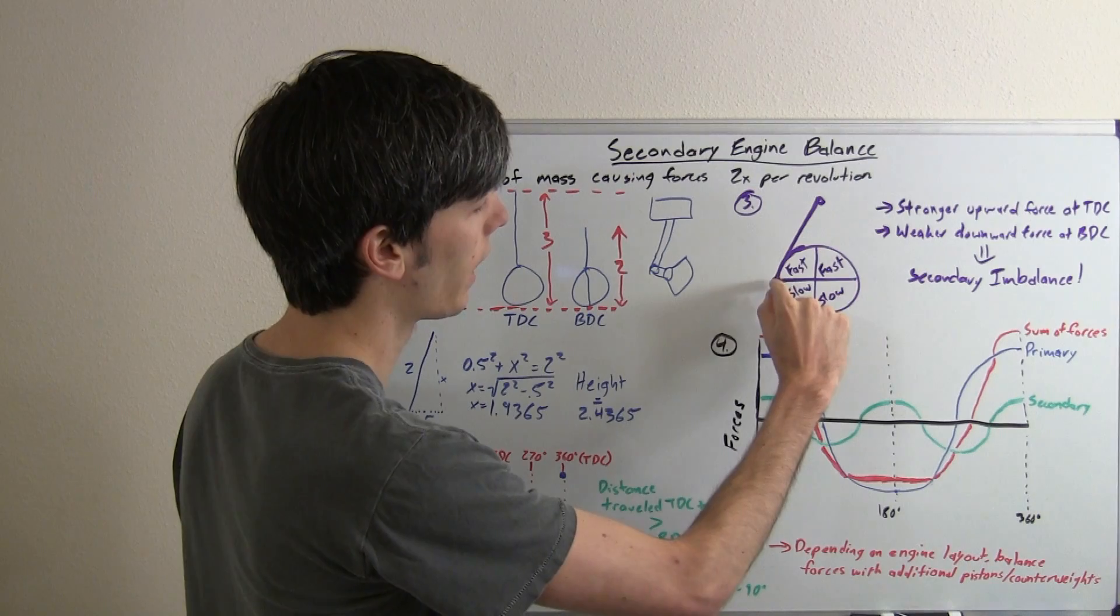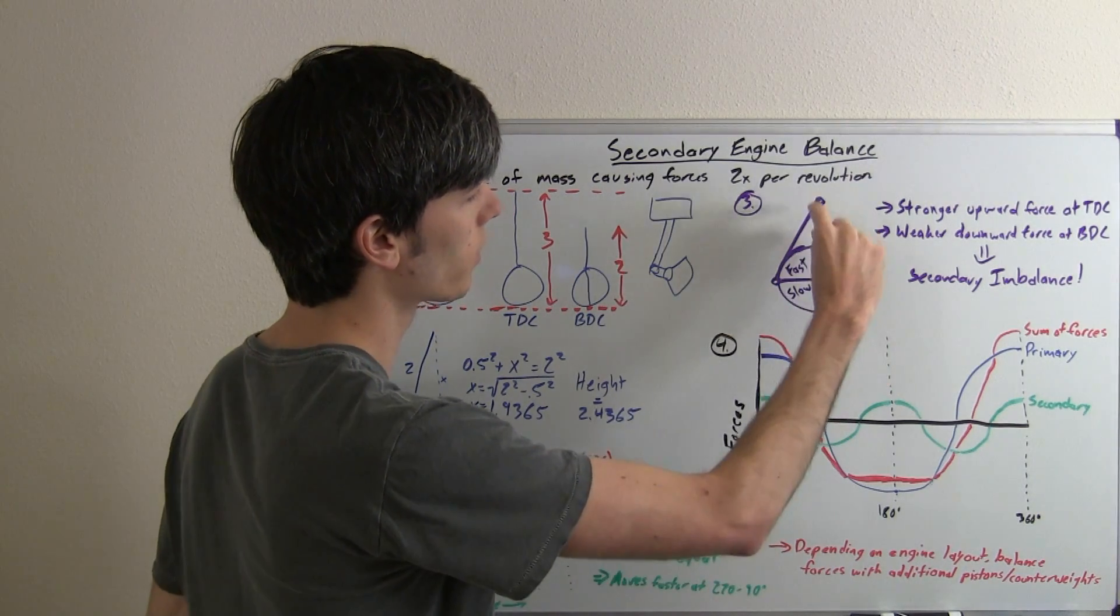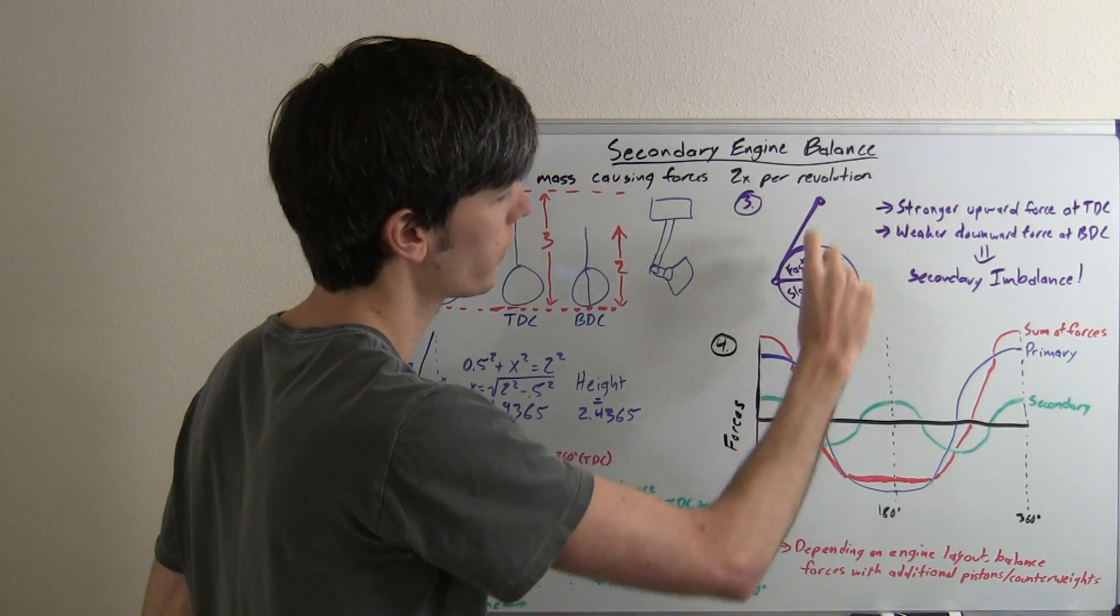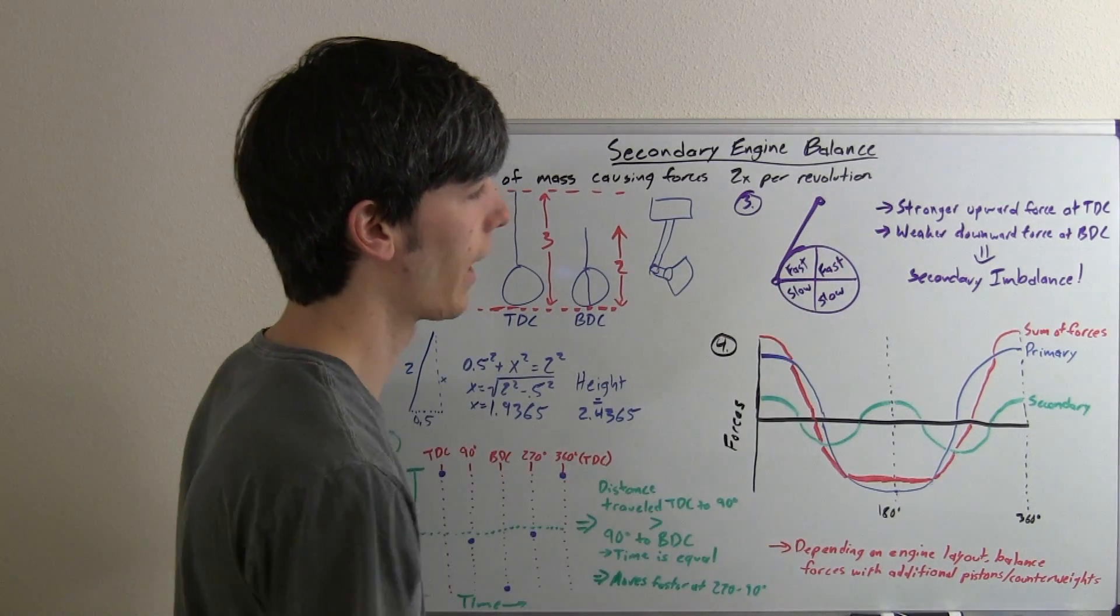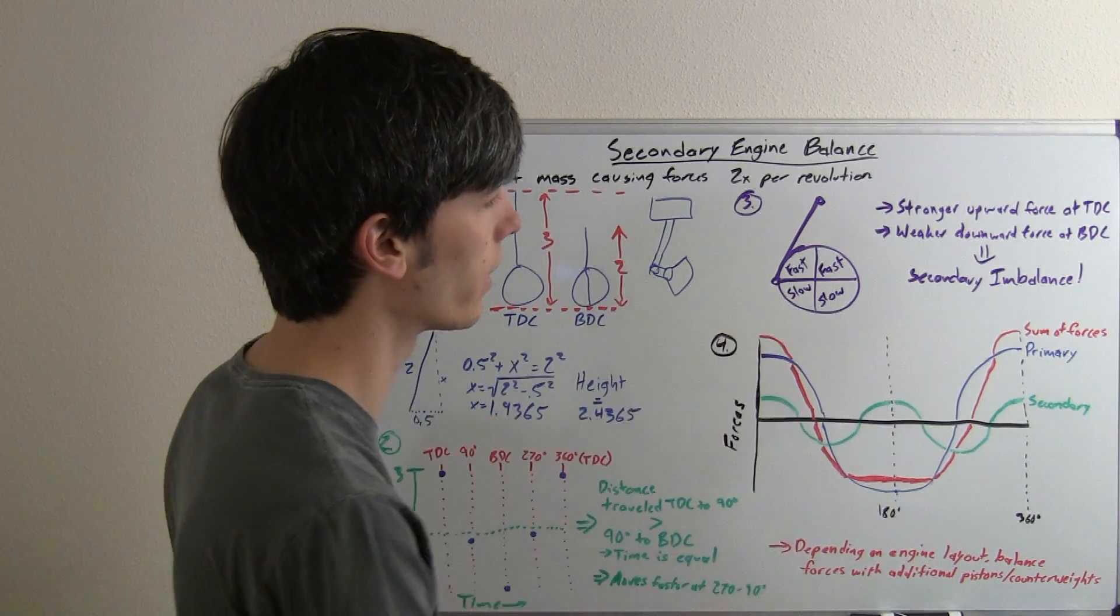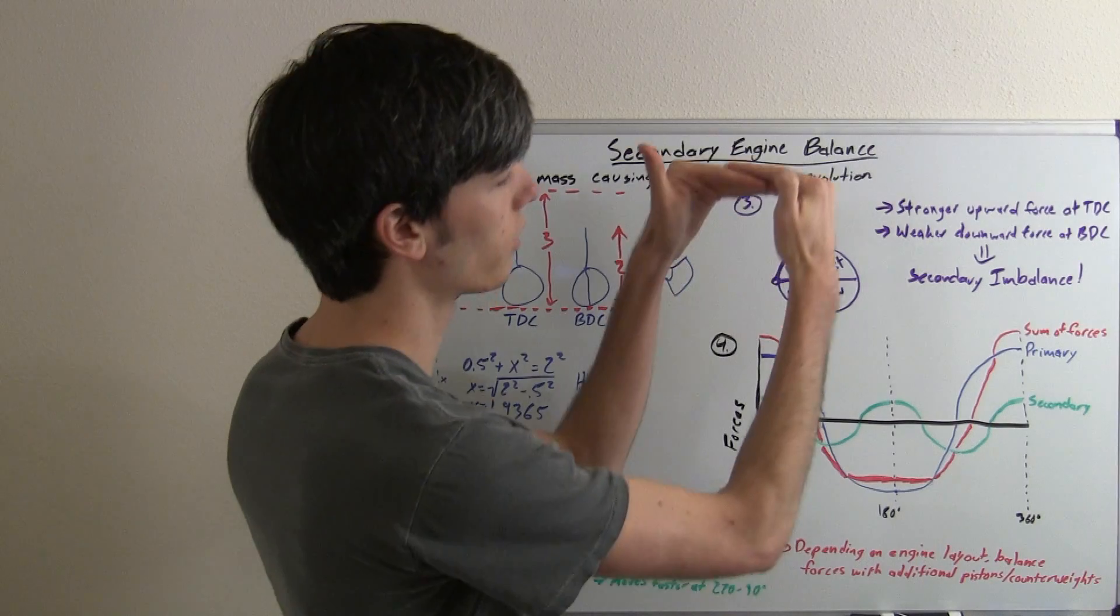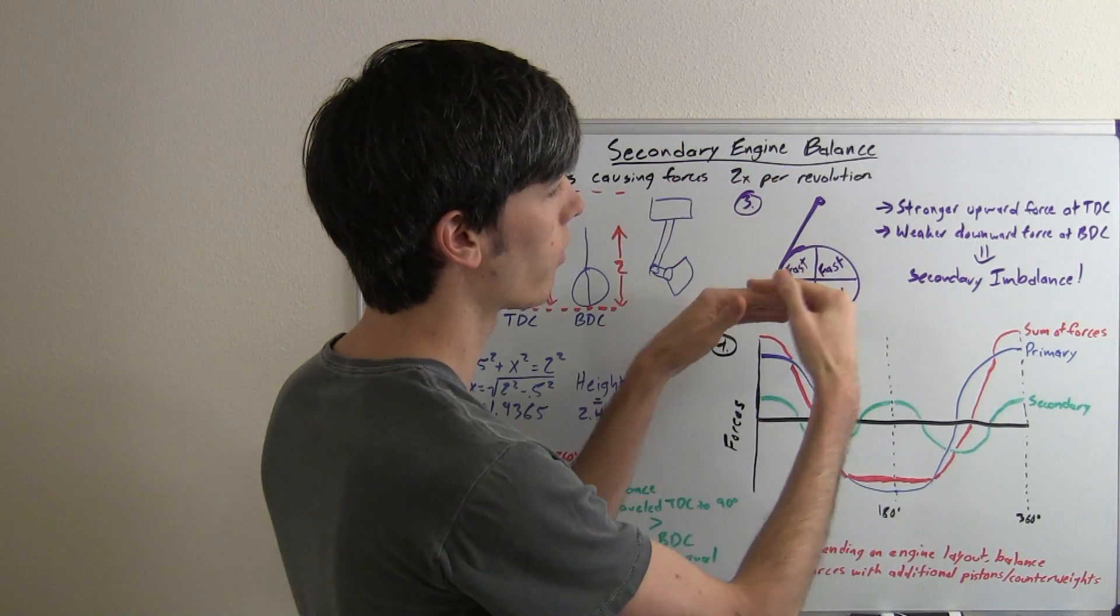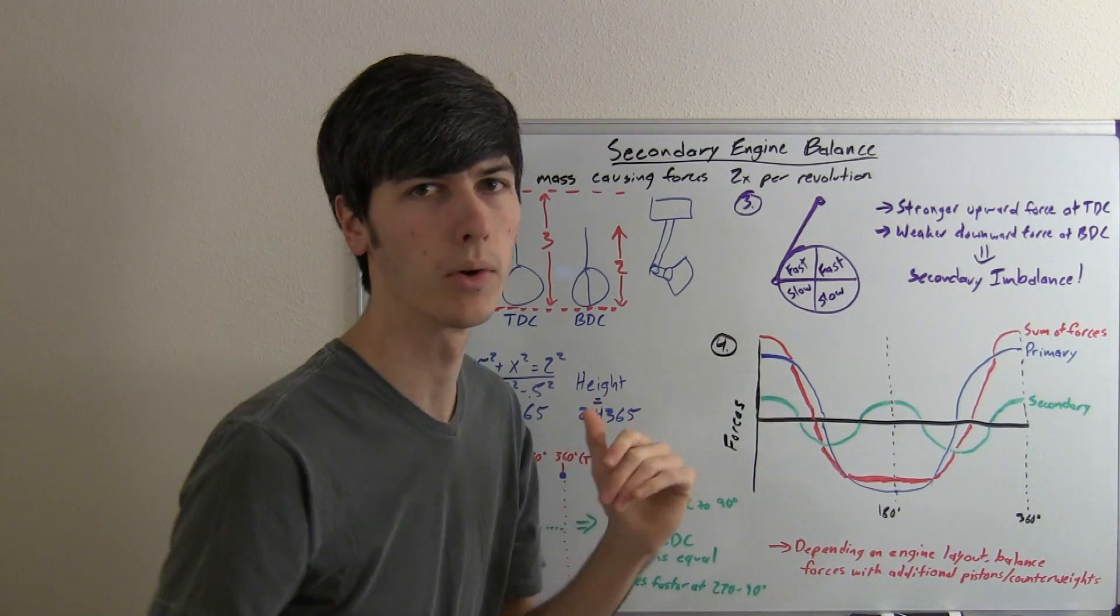So what's happening is, here you've got your connecting rod, and as it rotates on this top 180 degrees, the piston's going to be traveling up and down faster than the piston when it gets to the bottom 180 degrees. And this is what creates your secondary imbalance. So what this does is, you have a stronger upward force because the piston's moving faster up, and then you have a weaker downward force because the piston's moving slower when it moves down.